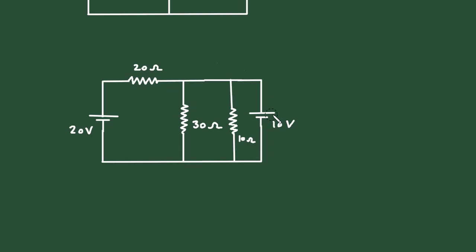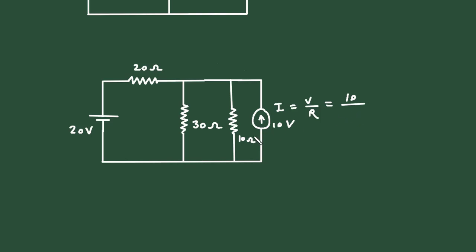The polarity of this 10 volt is such that the positive is on the upper side and negative on the lower side. So the direction of the current source will be upward, and current I is equal to V upon R. Voltage V is 10 volt and the resistance is also 10 ohm, so it will be 1 ampere. Now we can erase this 10 volt.